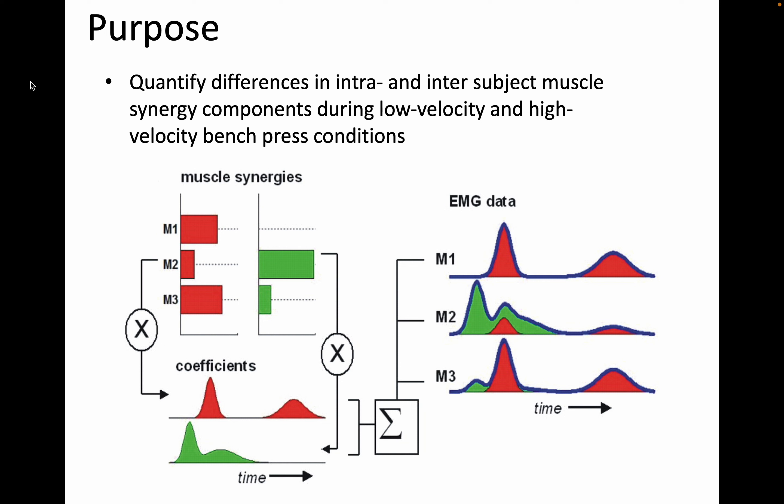The coefficients, which are dependent on time, show that muscle synergy 1 and muscle synergy 2 both peak at the beginning of the movement, but muscle synergy 2 does so a little earlier. They have a different signature at the end of their waveform, and muscle synergy 1 also shows some activation at the end of the movement.